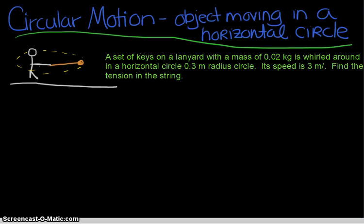So this would be the radius of the circle, you at the center of the circle. This speed should say three meters per second, so let's fix that really quick. This should be three meters per second. We know the mass of the keys and we want to find the tension in the string.